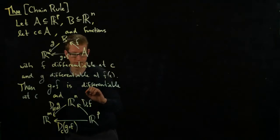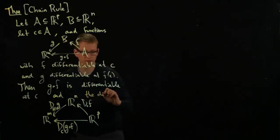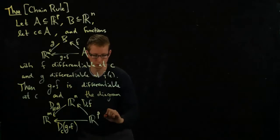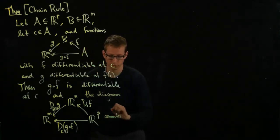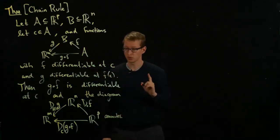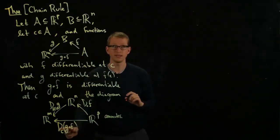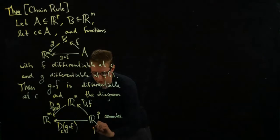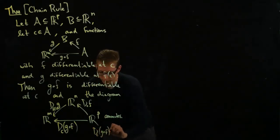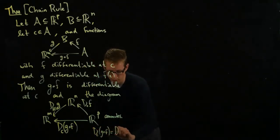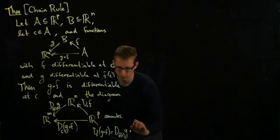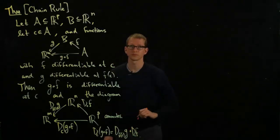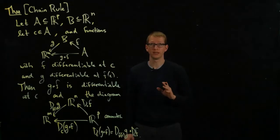The claim is that here we have three operators, and this diagram commutes. It means that this function, this linear transformation, equals this one composed with this one. In other words, D_C(G∘F) equals the matrix multiplication of these two linear transformations. That's the chain rule in higher dimensions.